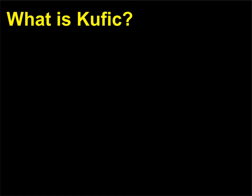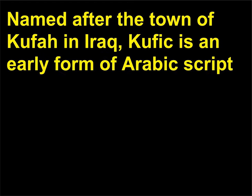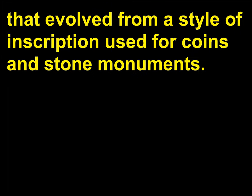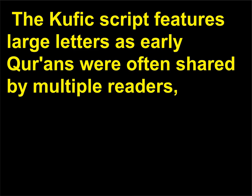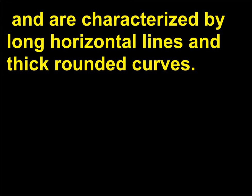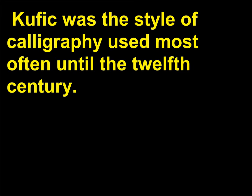What is Kufic script? Named after the town of Kufa in Iraq, Kufic is an early form of Arabic script that evolved from a style of inscription used for coins and stone monuments. The Kufic script features large letters, as early Qurans were often shared by multiple readers, and are characterized by long horizontal lines and thick rounded curves. Kufic was the style of calligraphy used most often until the 12th century.